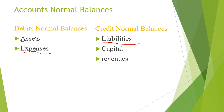On the credit side, liabilities, capital, and revenue all have credit normal balances. When we close transactions, the balance remaining in the asset account is on the debit side, the balance in the expenses account is on the debit side, and the liabilities balance is on the credit side.